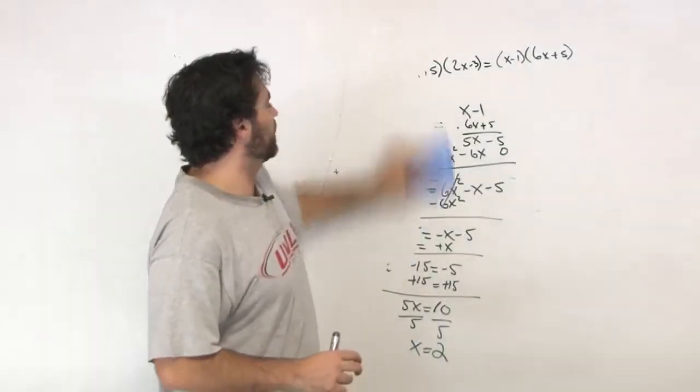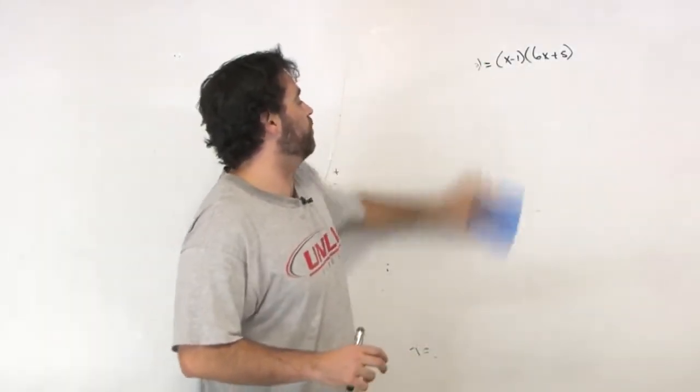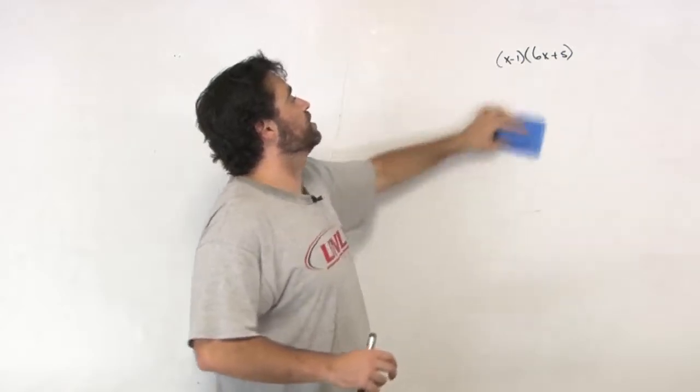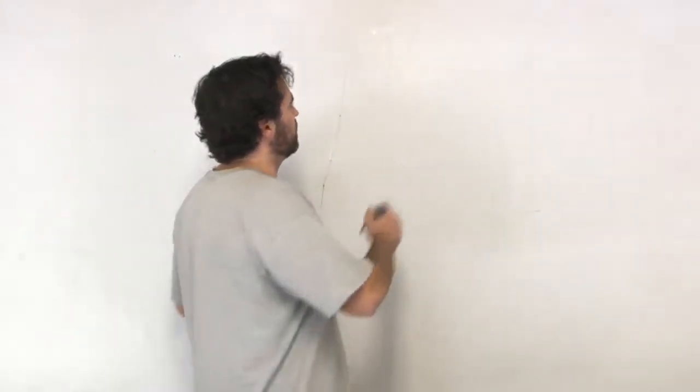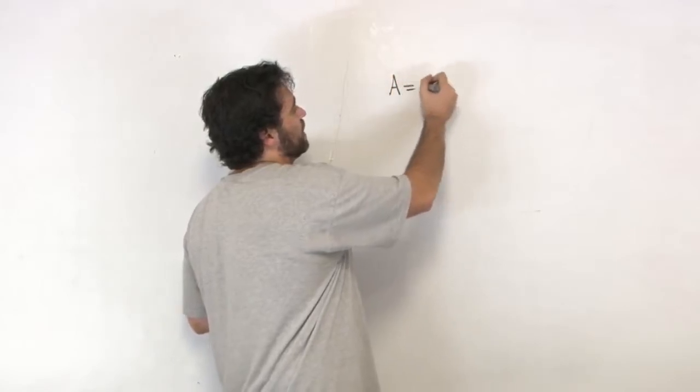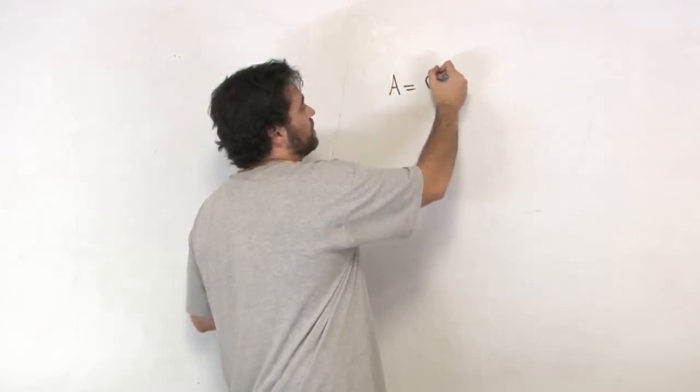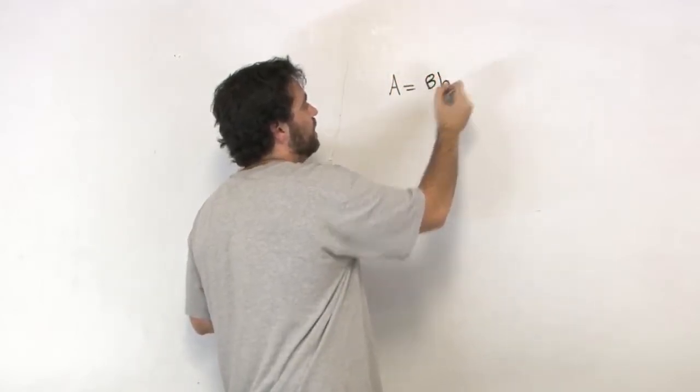Because what are formulas? Just fancy equations, right? So we're talking about formulas are just fancy equations. We start out with something easy. We say the area of a rectangle is equal to base times height.